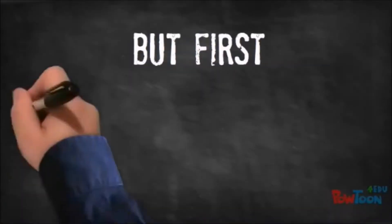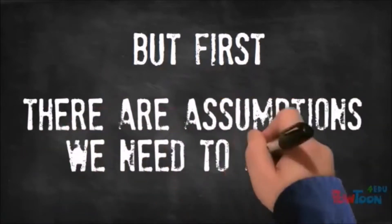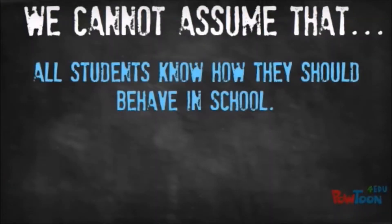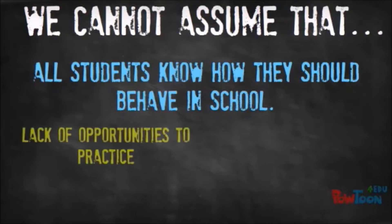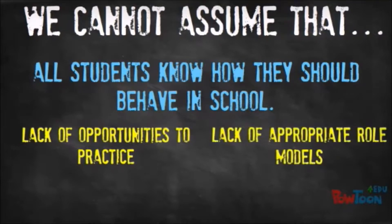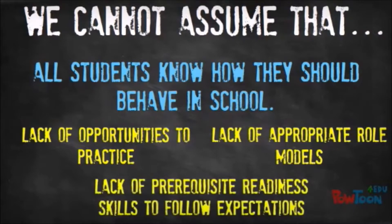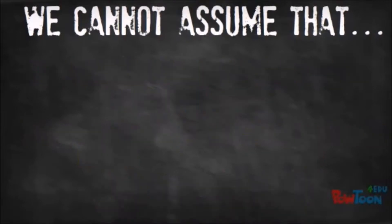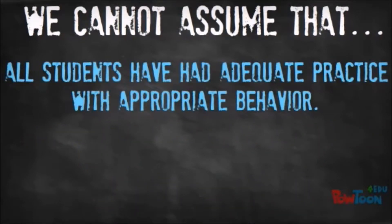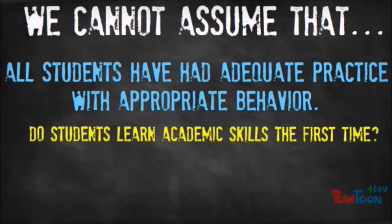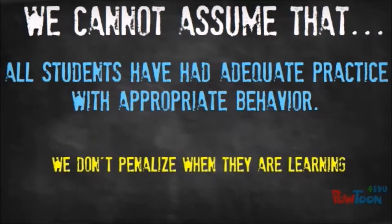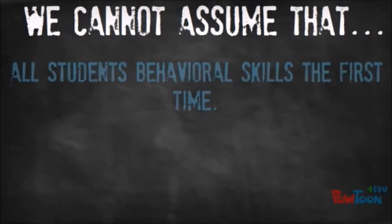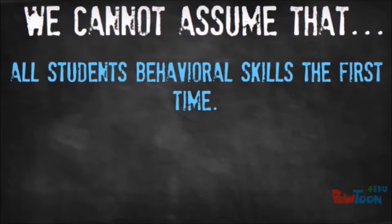First, let's talk about some assumptions that we need to avoid. We can't assume that all students know how they should behave in school. Not all students have had adequate practice, not all students have had adequate role models, and many students are coming to school without the social readiness skills to meet teachers' expectations. We can't assume that all students have had adequate practice with appropriate behavior. Students don't always learn academic skills the first time, and we don't penalize them for that. We can't assume that all students are going to learn behavioral skills the first time.